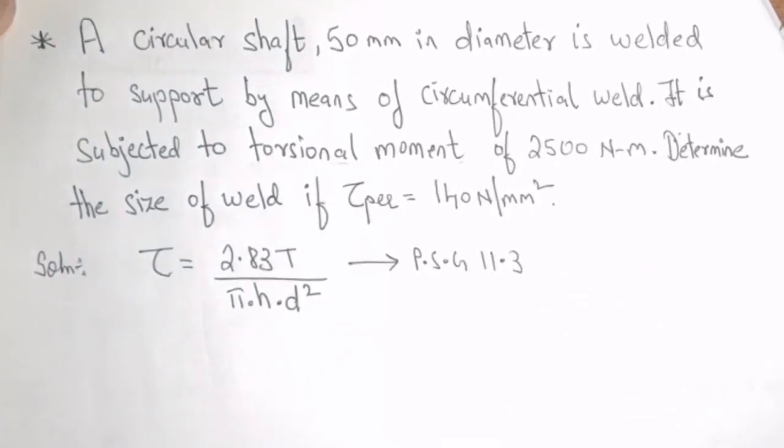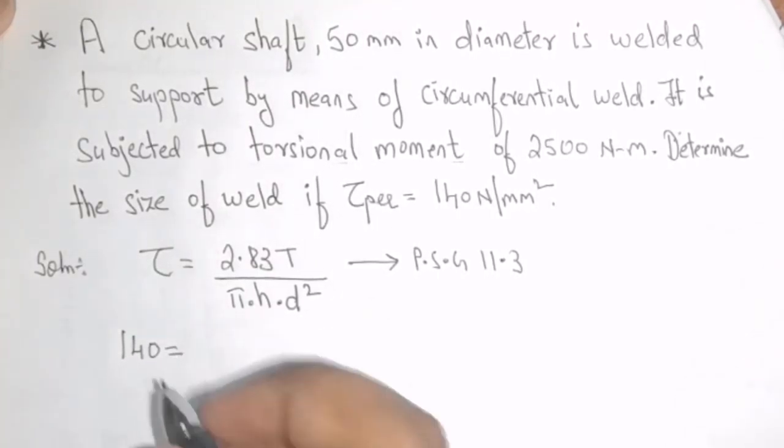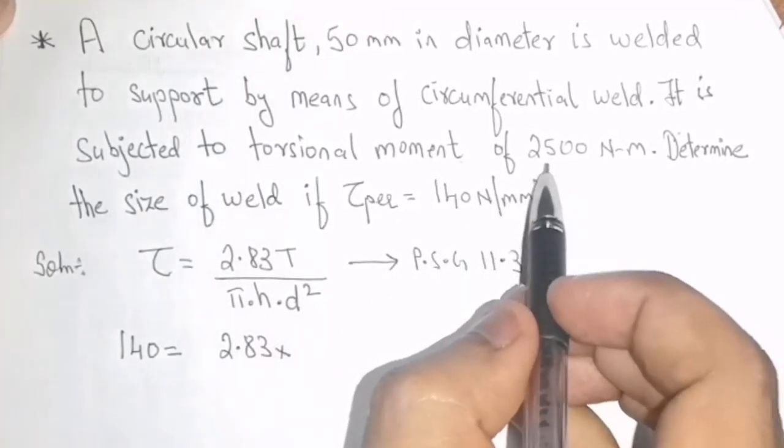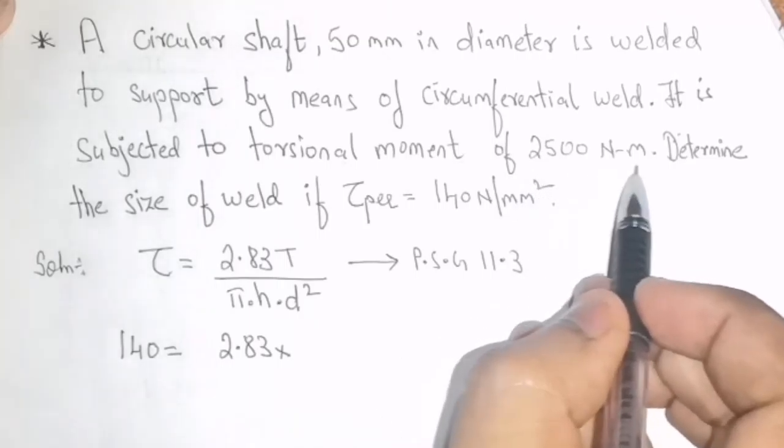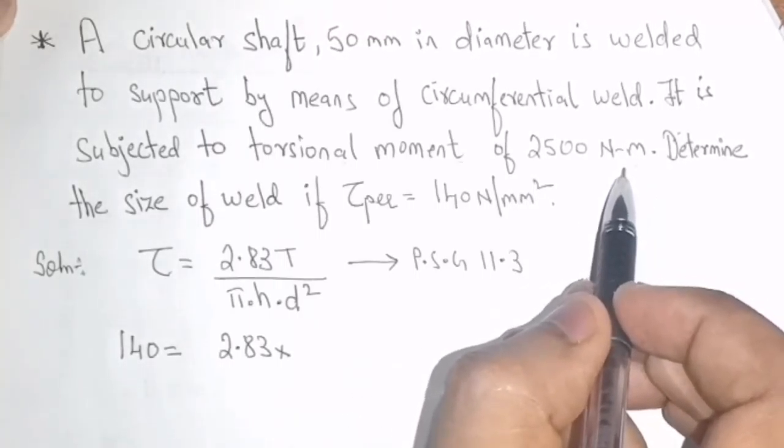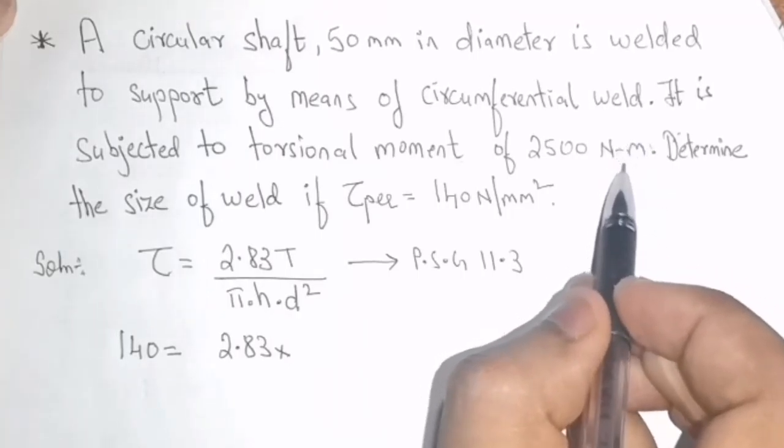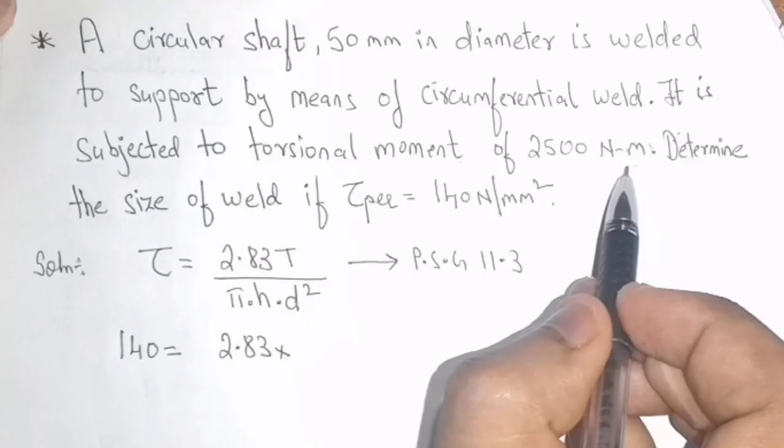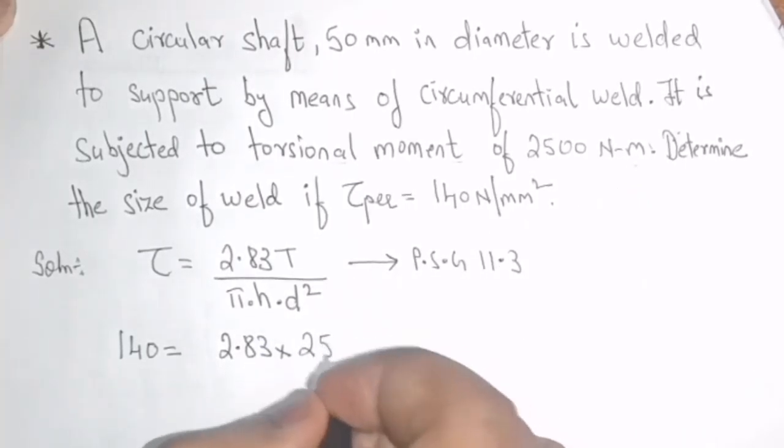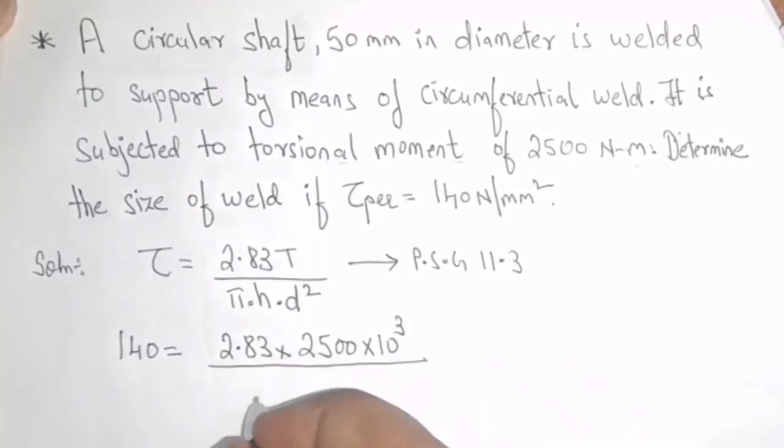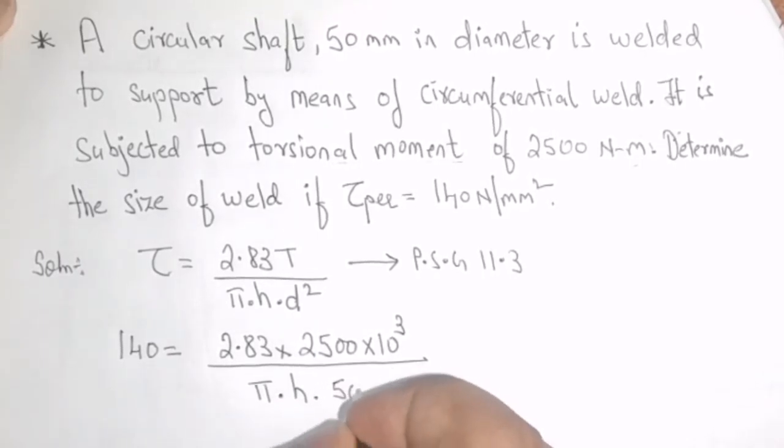Substituting the values which are known to us, Tau is given to us as 140, 2.83 multiplied by T. The torsional moment is given to us as 2500 newton meter. Most of the students make mistake here. The unit is newton meter and we are working in newton mm. So, we need to convert this. So, it will be 2500 into 10 raise to 3 divided by pi into H is unknown multiplied by diameter is given to us as 50 mm.